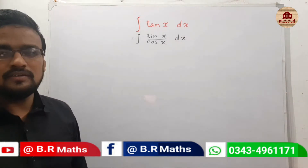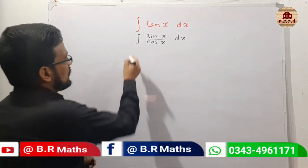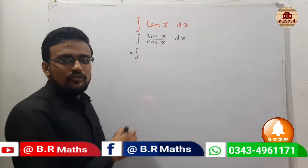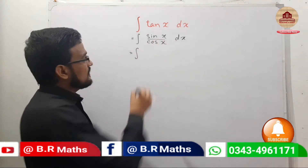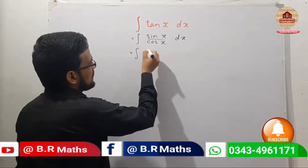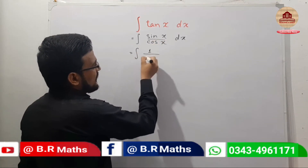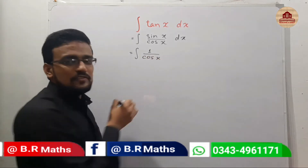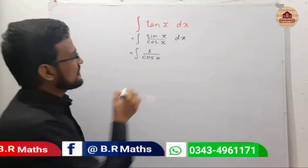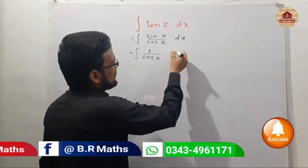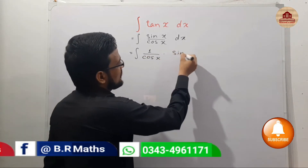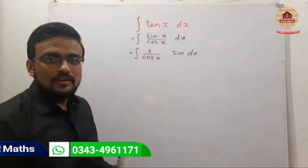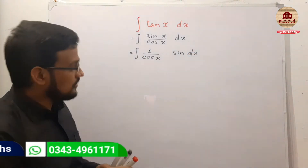And you know sin over cos means you can write it in this form: 1 over cos(x) times sin(x).